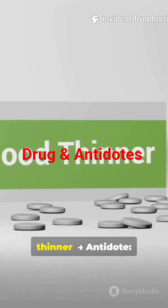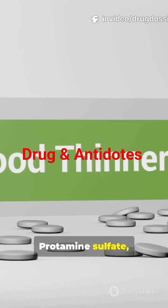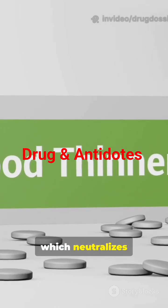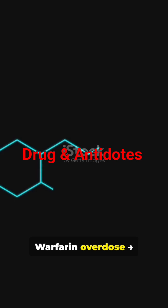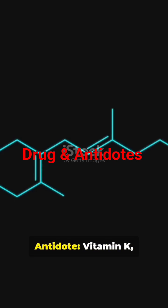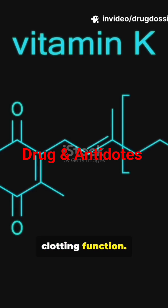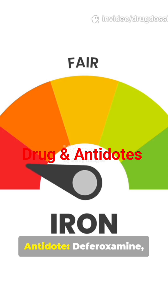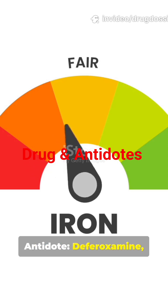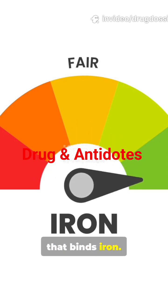Heparin, a blood thinner — antidote: protamine sulfate, which neutralizes excess bleeding. Warfarin overdose — antidote: vitamin K, which helps restore clotting function. Iron poisoning — antidote: deferoxamine, a chelating agent that binds iron.